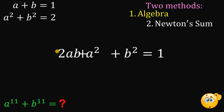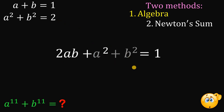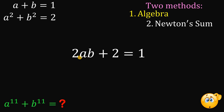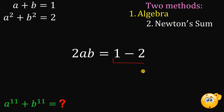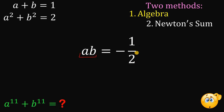Let's rearrange: we have 2ab plus a squared plus b squared equals 1. We know the value of a squared plus b squared is 2, so we can replace it. Subtracting 2 from both sides gives 2ab equals 1 minus 2, which is negative 1. Dividing both sides by 2, we get that the product ab equals negative 1 half. This is very important in our solution.